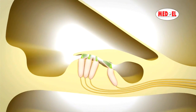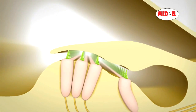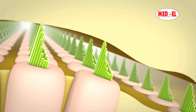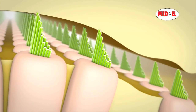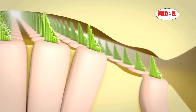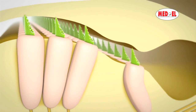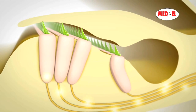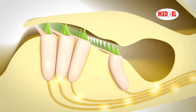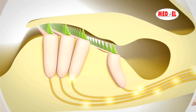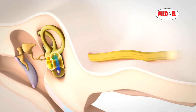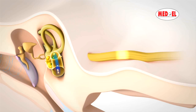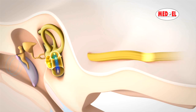As the fluid in the cochlea is set in motion, it causes a corresponding movement of the fine structures on the surface of the hair cells to take place. These movements cause tension differences, which produce electrical signals that are passed along the hearing nerve to the brain. The auditory cortex of the brain interprets this information as sound, for example as music or speech.